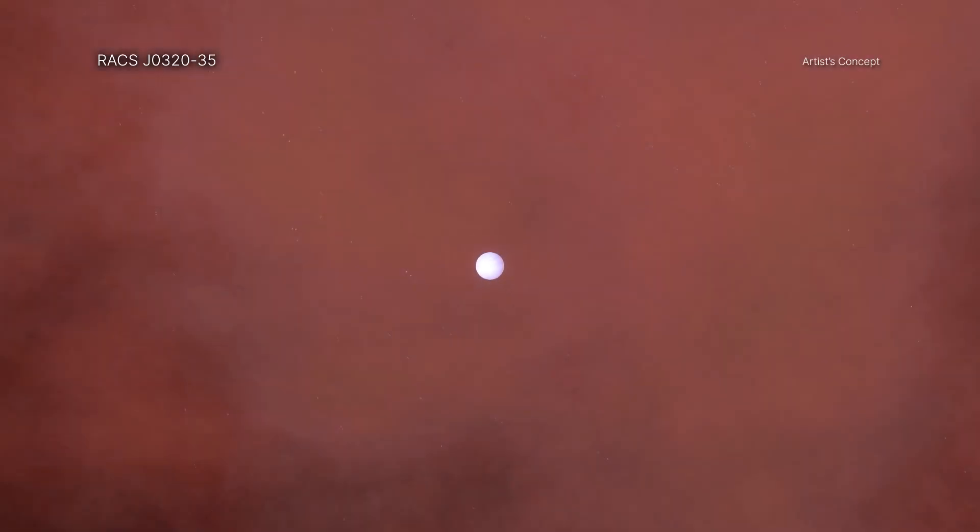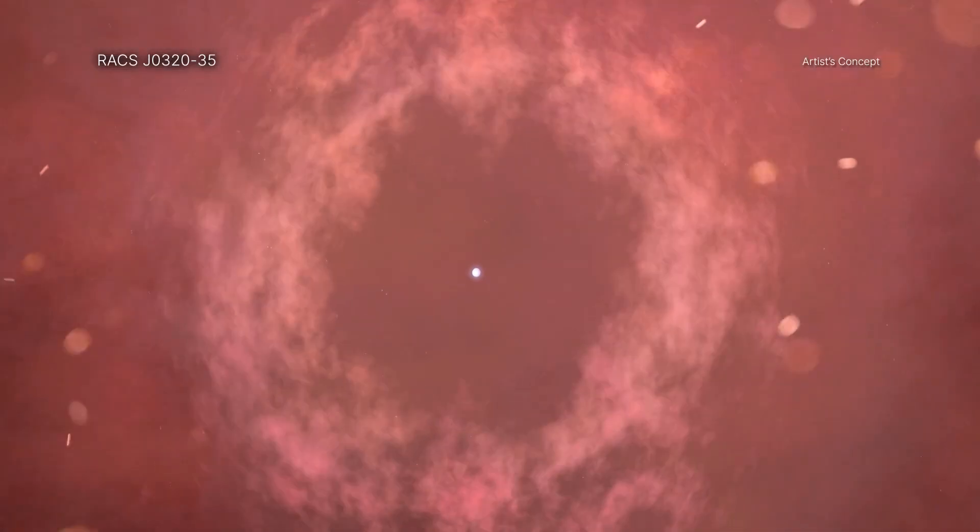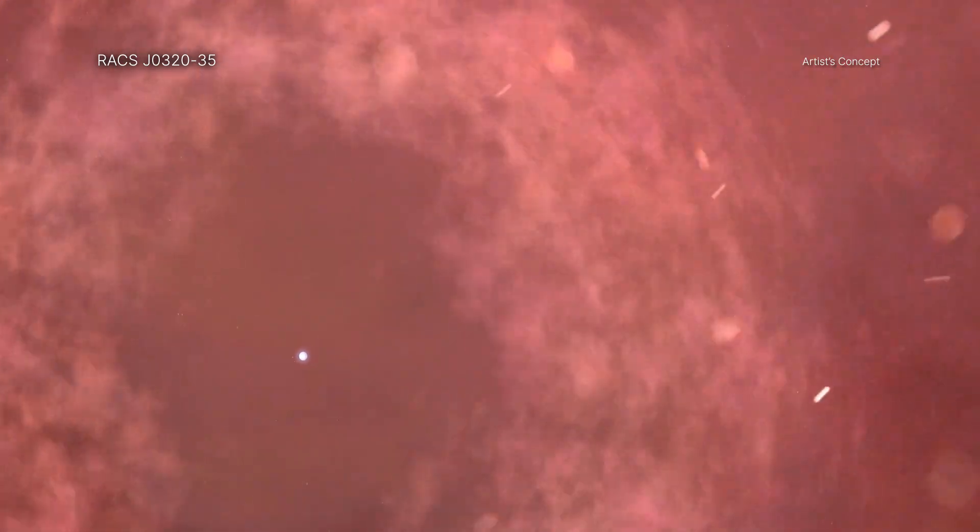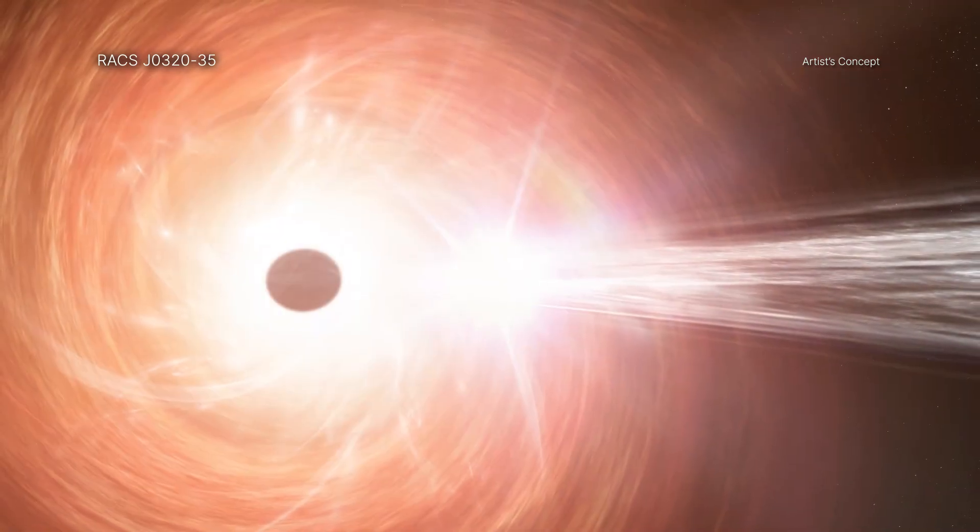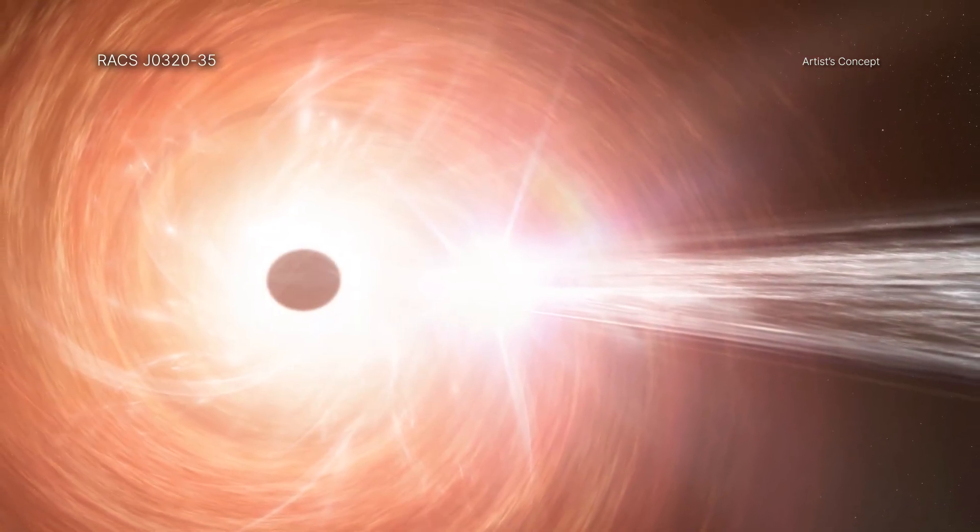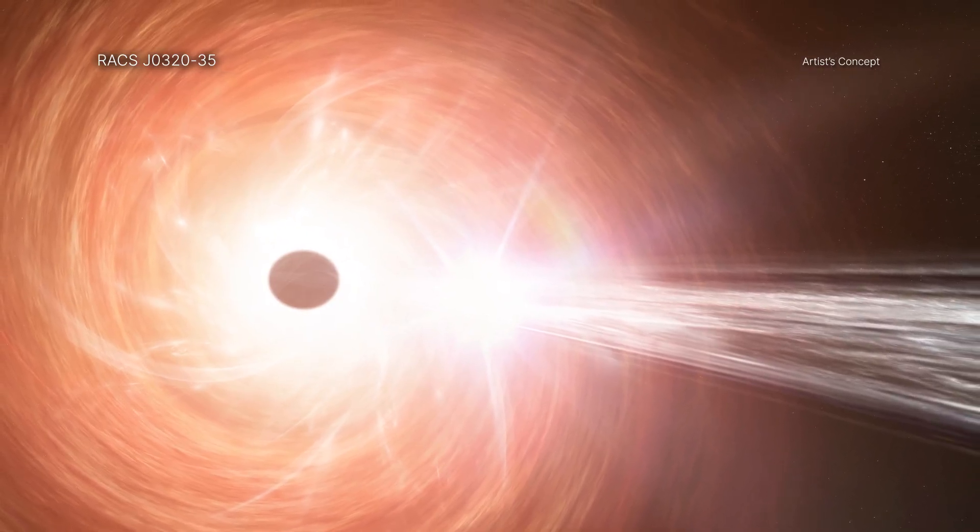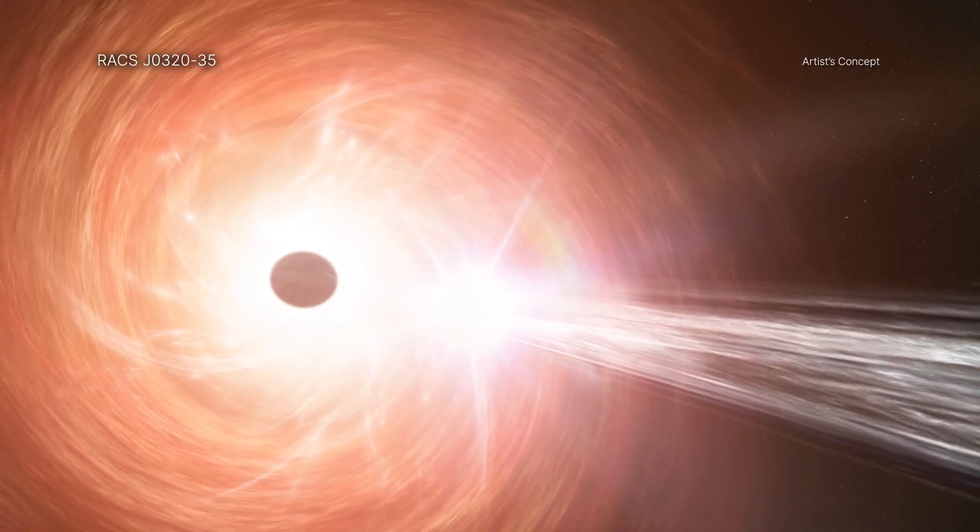By knowing the mass of the black hole and working out how quickly it's growing, the researchers were able to work backwards to estimate how massive it could have been at birth. With this calculation, astronomers can test different ideas about how black holes are born.